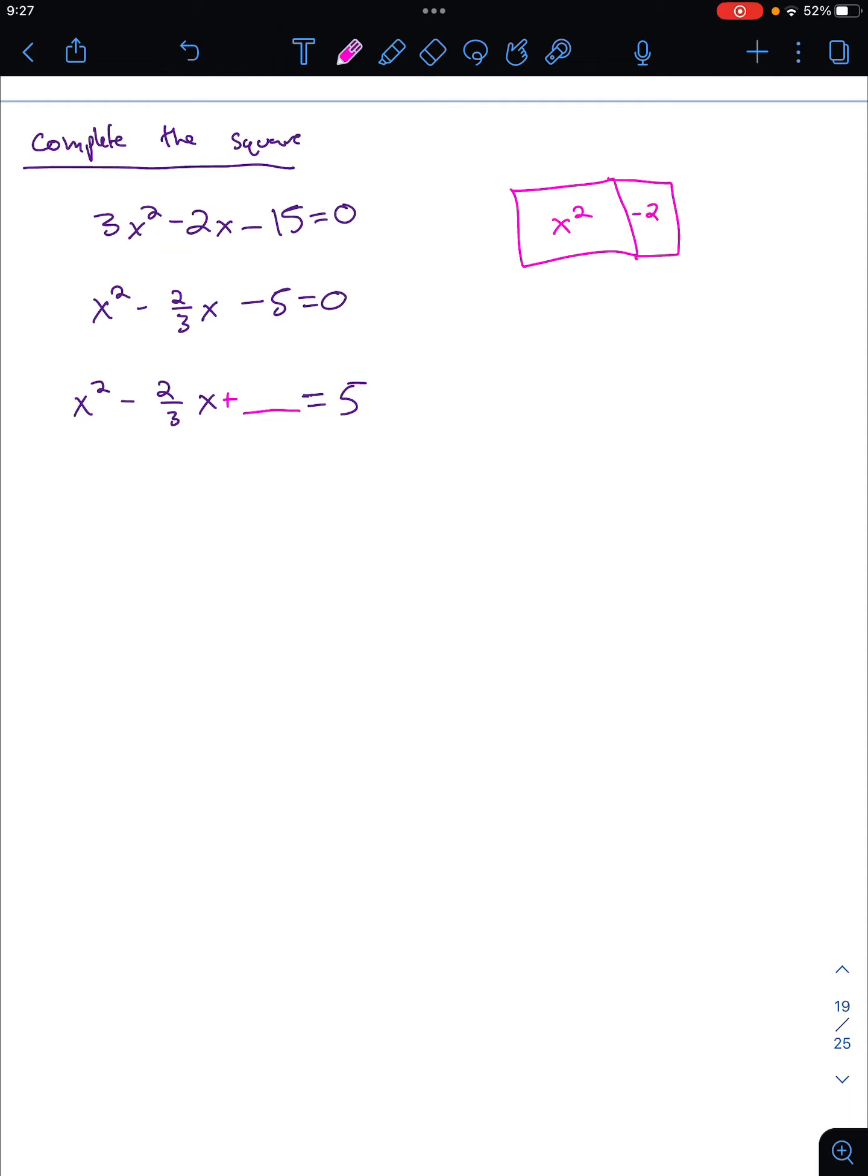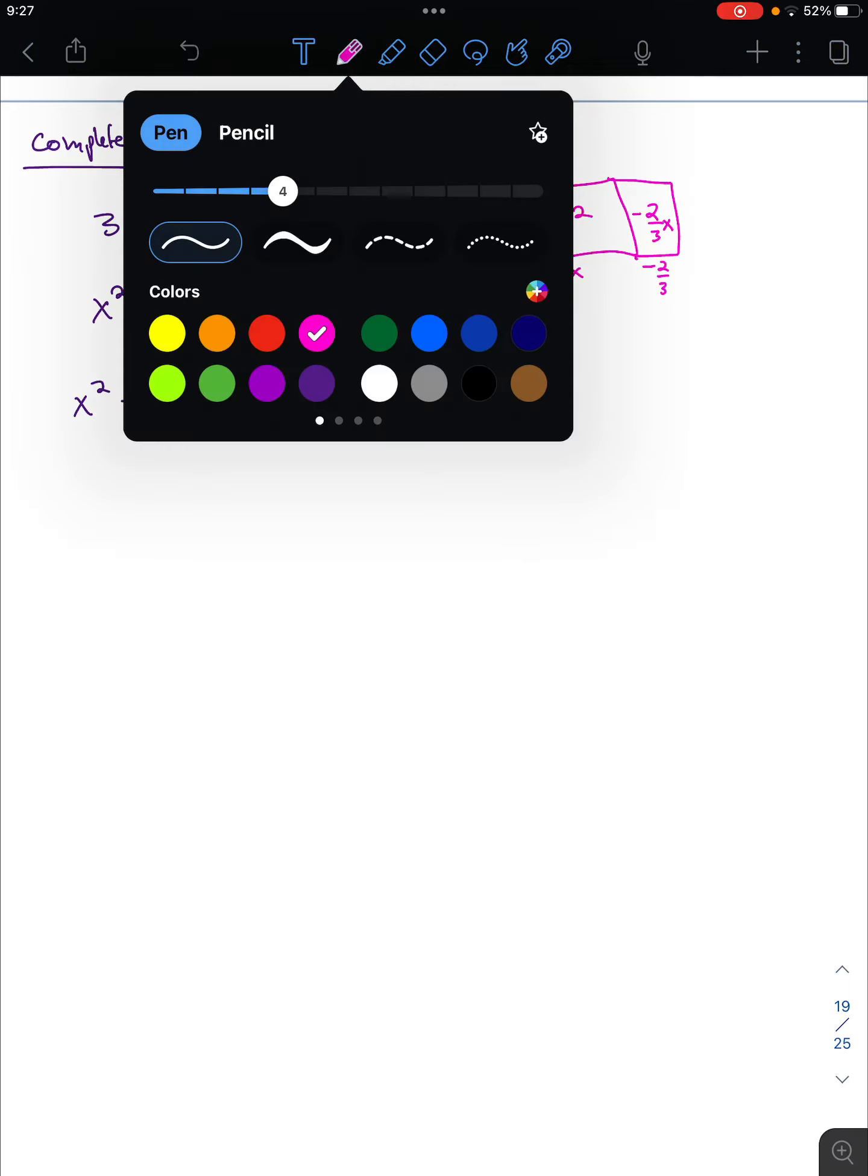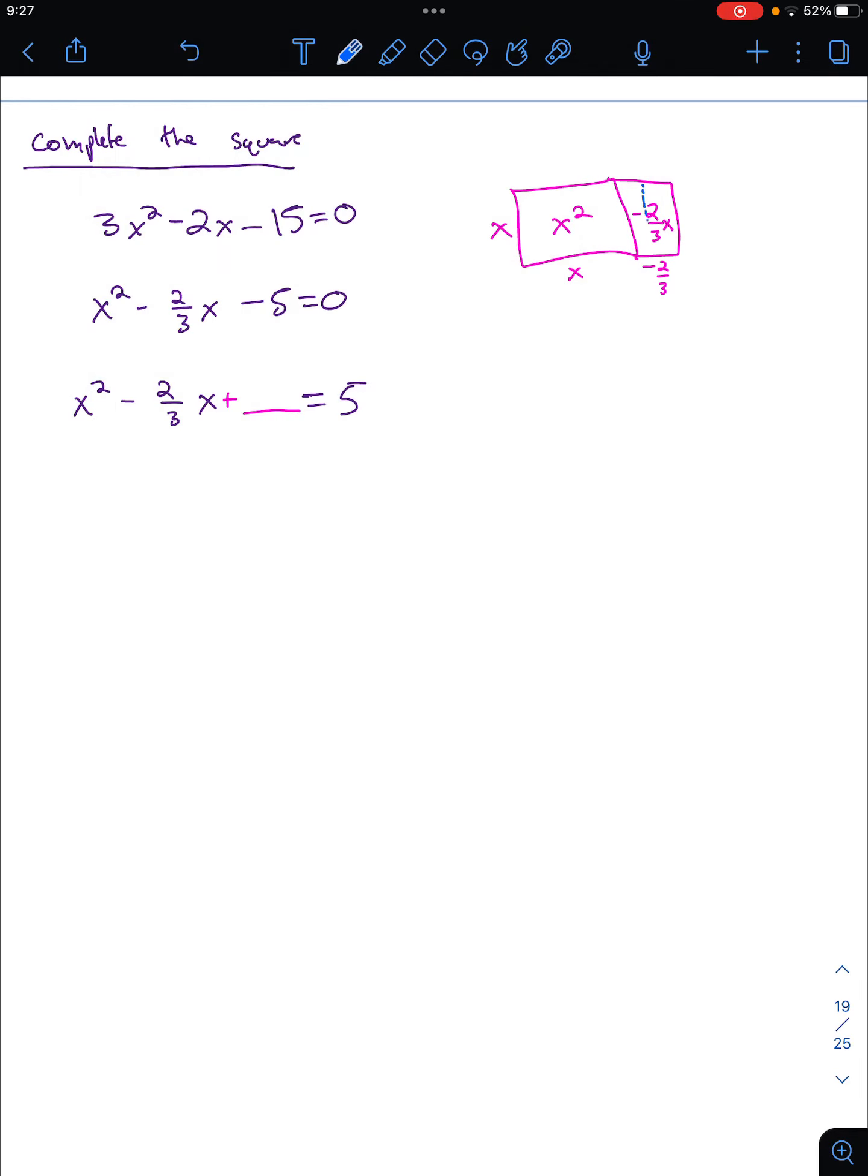Based on the structure, I'm going to do x squared minus 2 thirds x, and add 5 to both sides equals 5. And I'm going to put a plus blank, because I can add something to complete the square here. Geometrically, if I have an x squared, I have an x squared, and this is going to represent a minus. So this is minus 2 thirds x, and that would mean I have dimensions x, x, and here would be negative 2 thirds.